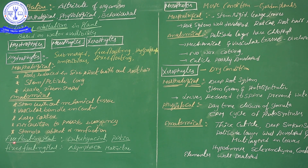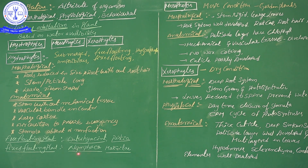Free floating plant examples: water hyacinth and Pistia — these two float freely on the water surface without any contact with the bottom soil. Fixed floating plant examples: Nymphaea (Tamarai in Tamil) and Marsilea. These are rooted in the soil but their leaves float on the surface. Students should remember these examples.